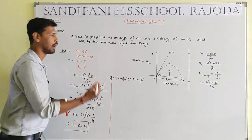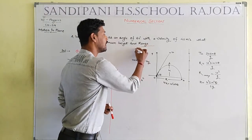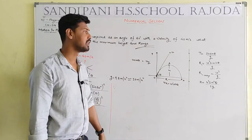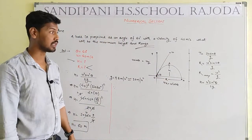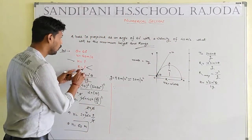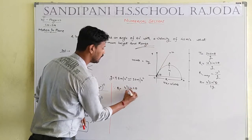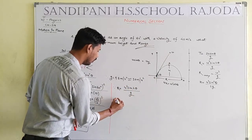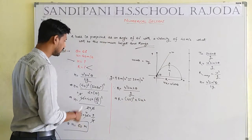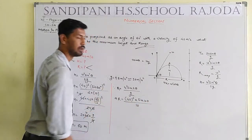Now we have to calculate the value of R, the range. The formula is: R = u² sin2θ / g. The value of u = 40 m/s, theta = 60°, so 2θ = 120°, and g = 10 m/s².